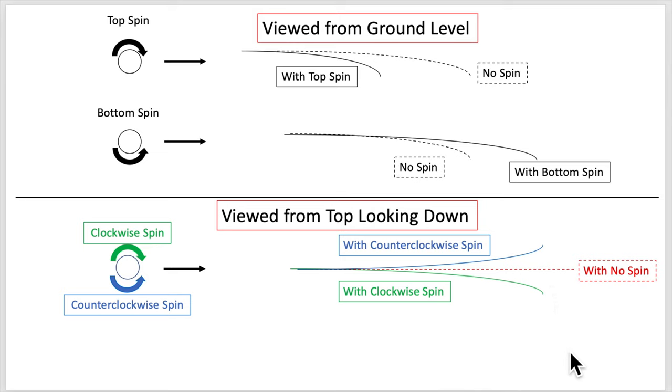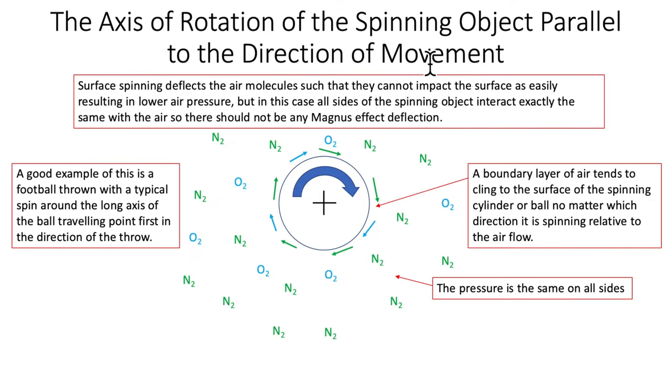Most of the time we're talking about throwing curve balls and Flettner rotors and so forth. But what if the axis of rotation of the spinning object is parallel to the direction of movement? In this case, surface spinning deflects air molecules such that they cannot impact the surface as easily resulting in lower air pressure. But in this case, all sides of the spinning object interact exactly the same so there would not be any net Magnus effect.